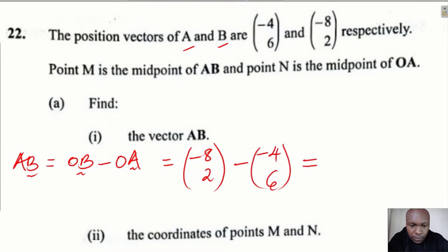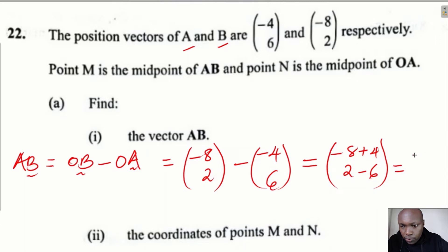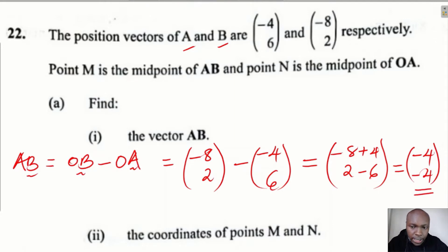Subtracting the position vector of A, which is OA = (-4, 6): we get -8 minus (-4) = -4, and 2 minus 6 = -4. So vector AB is (-4, -4).